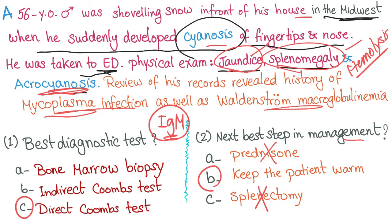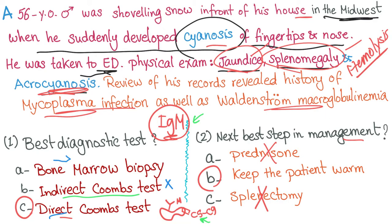Let's go back to the first question. Why direct, and why not indirect? The direct Coombs test detects the antibody on the surface of the red blood cell — in this case, the IgM. It can also detect complement on the surface of the red blood cell. The indirect Coombs test, on the other hand, detects antibodies in the plasma or serum. So direct is for what's on the surface of the red blood cells. We are looking for IgM or complement on the red blood cell, so we use the direct Coombs test.